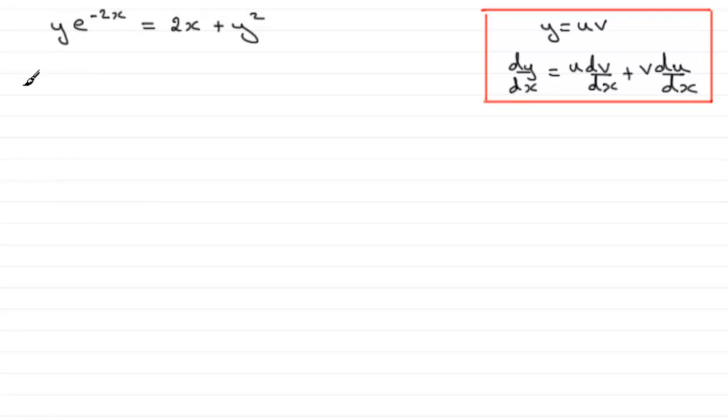So if I'm going to differentiate this, let's say we take y as the u part, one part, and we differentiate the other part e to the minus 2x. So we've got y multiplied now by the differential of e to the minus 2x with respect to x, and we should know that by the chain rule that comes out as minus 2e to the minus 2x.